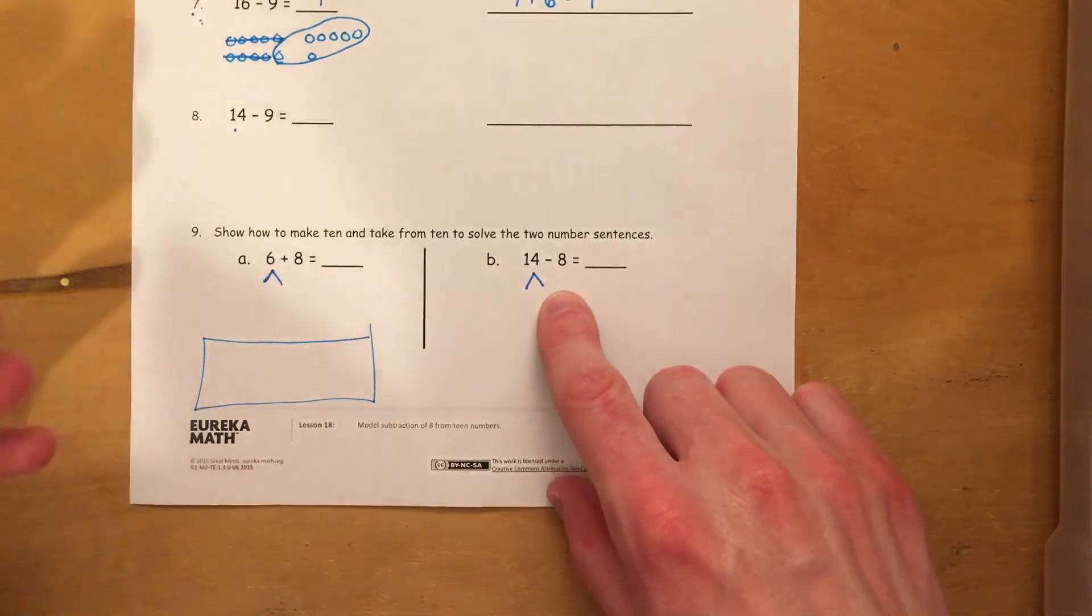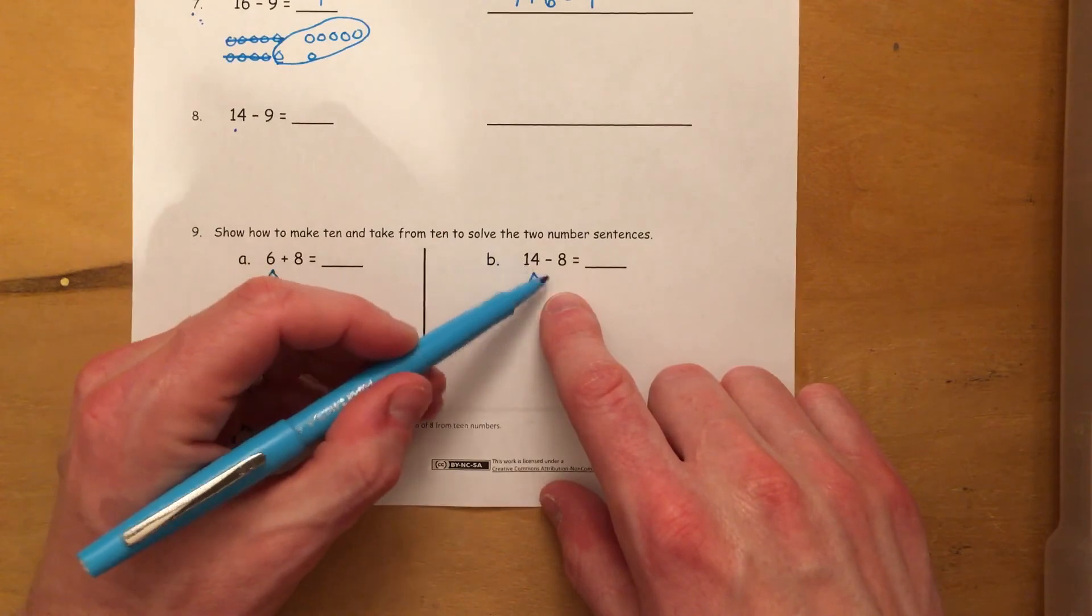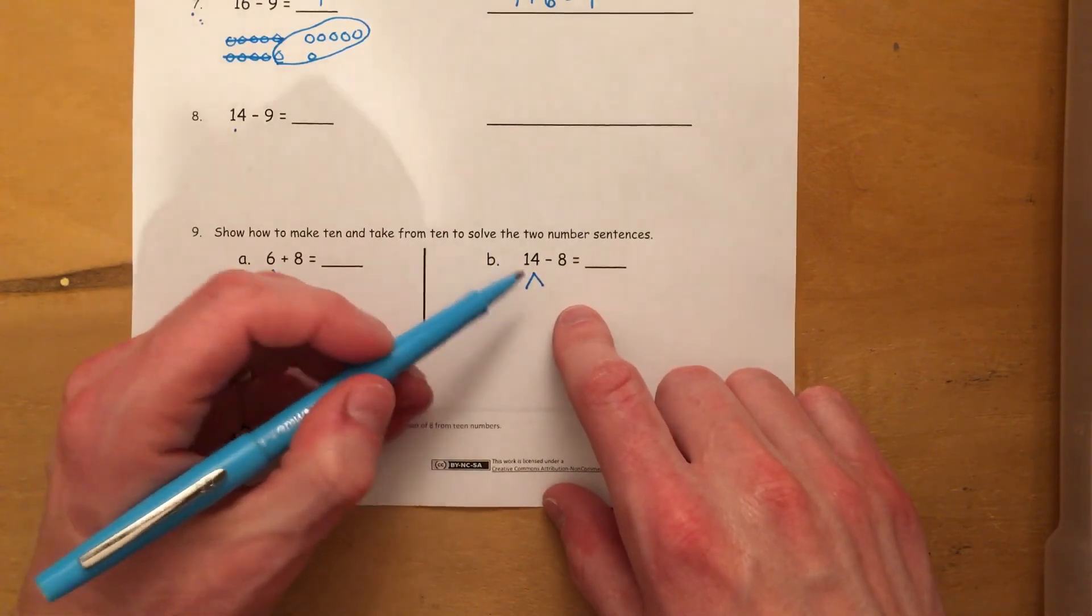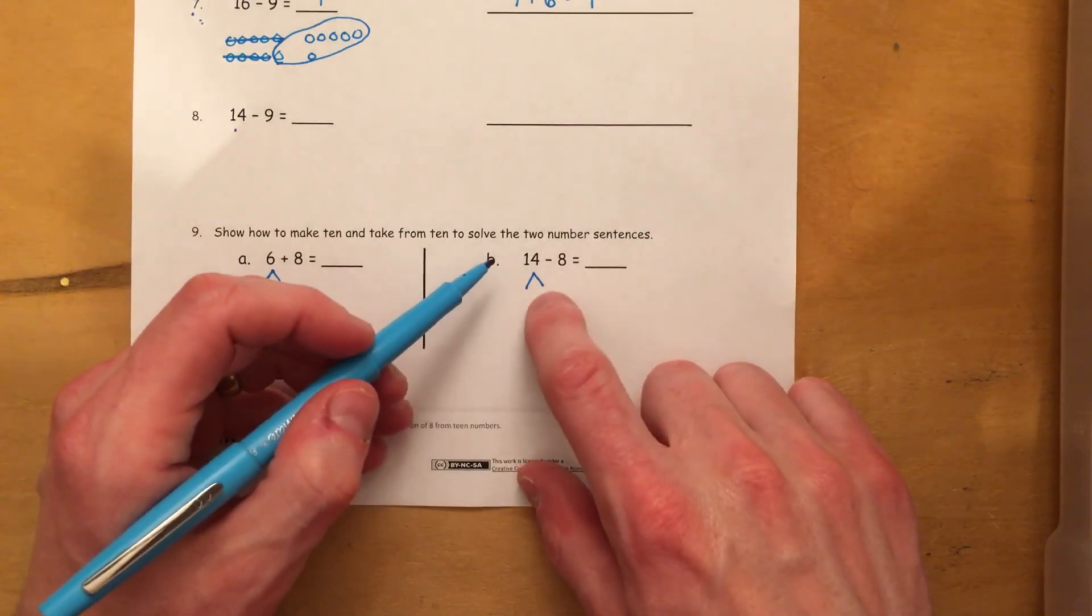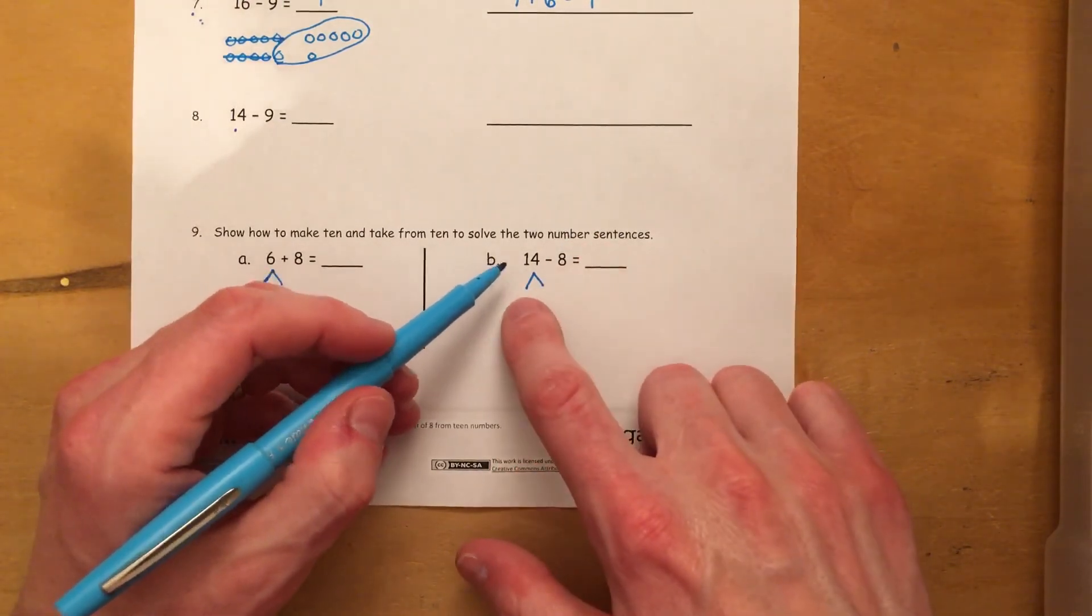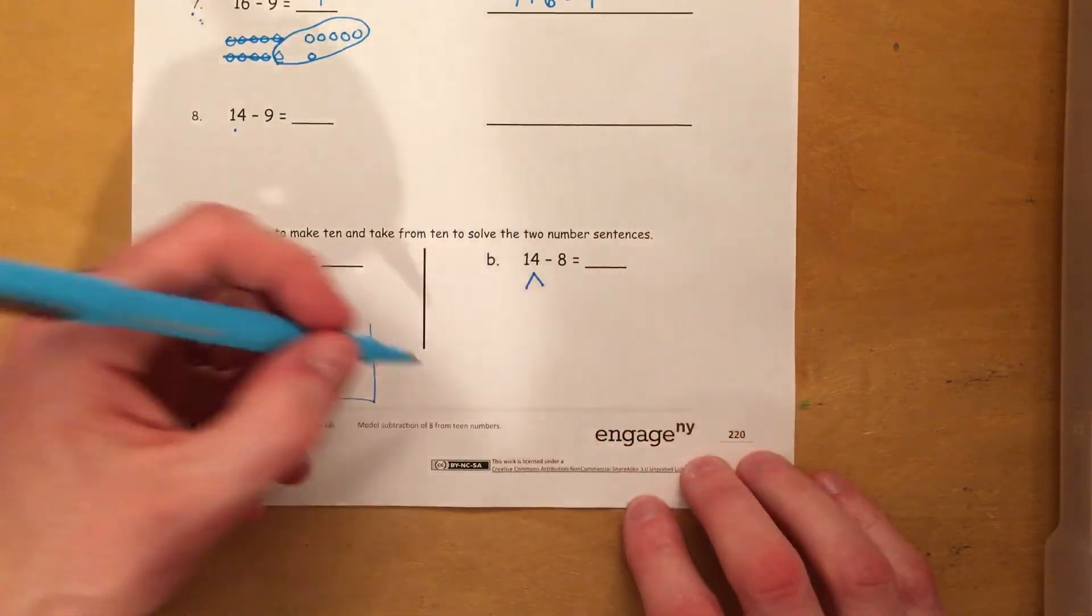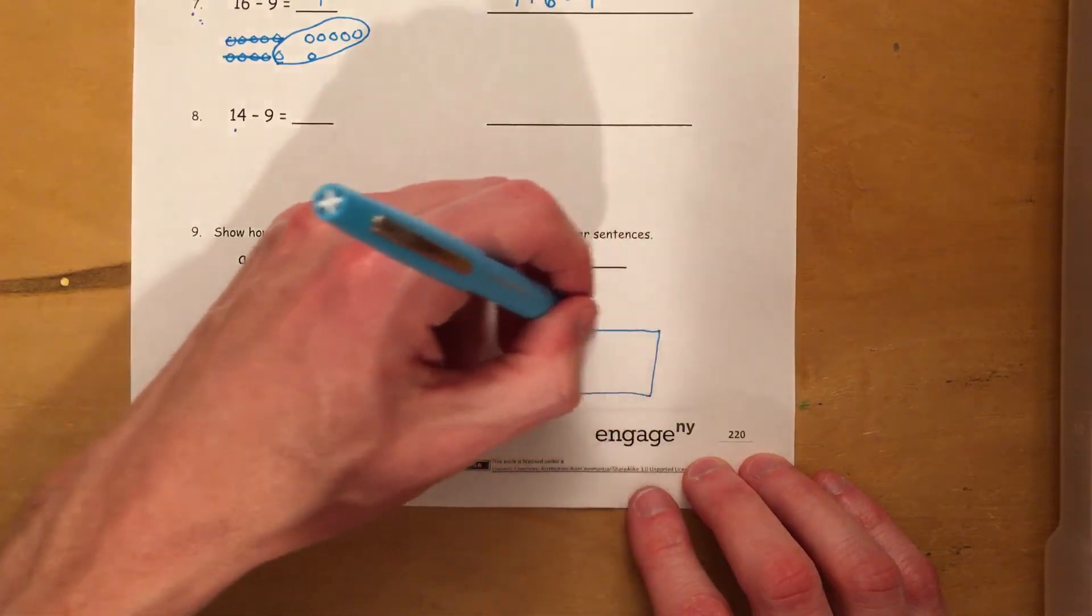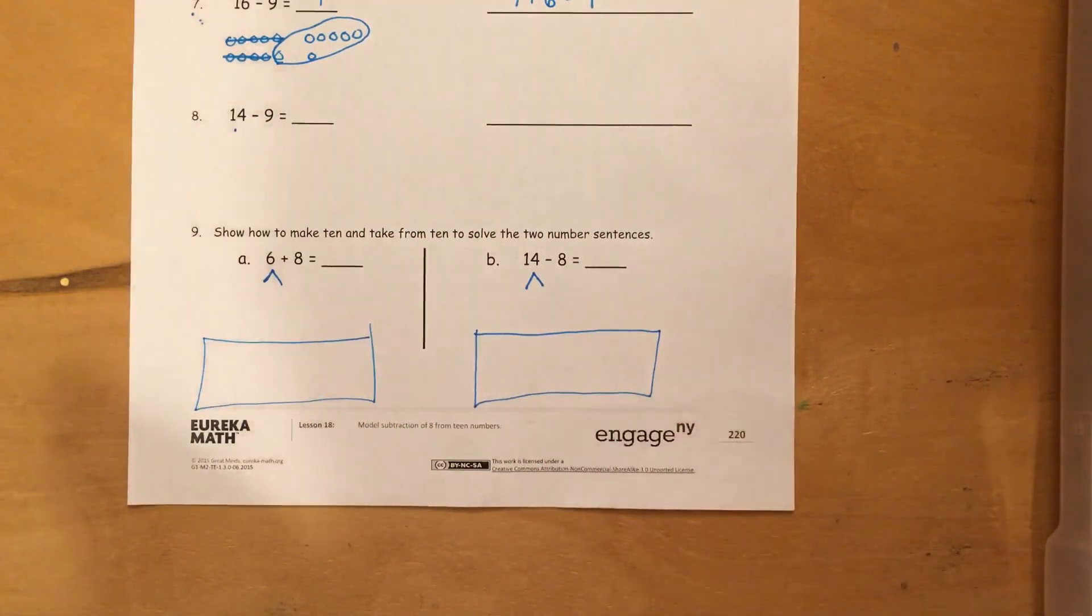Over here, this is what we've been doing the whole lesson. So what I want you to do is just break this apart. Make a 10. Put your remainder over here. Do your subtraction of 10 minus 8. Then add in your number from over here. And fill it in. So once again, I think that it would be a good idea to do a drawing for this one as well.